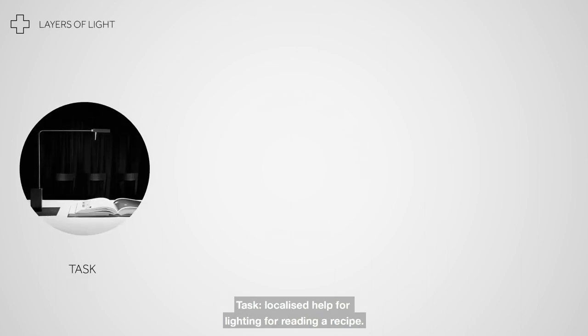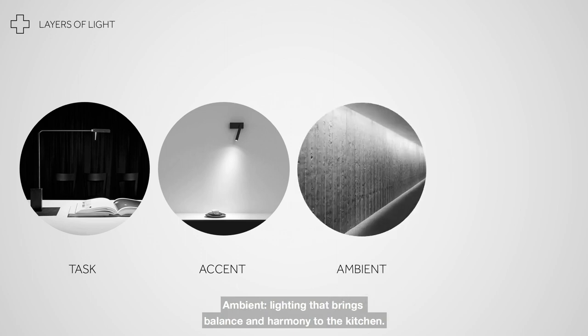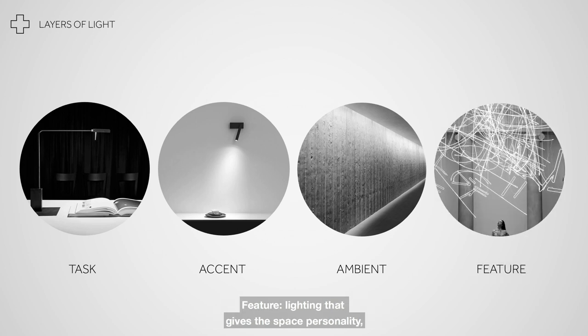Let's break down the various layers of kitchen lighting. Localised task lighting for reading a recipe. Accent lighting that illuminates key features or zones such as dining areas. Ambient lighting that brings balance and harmony to the kitchen. And feature lighting that gives the space personality, such as a focal point above an island unit.